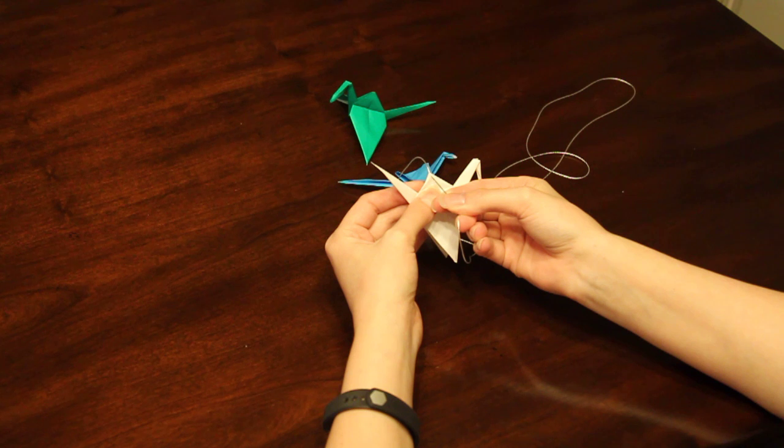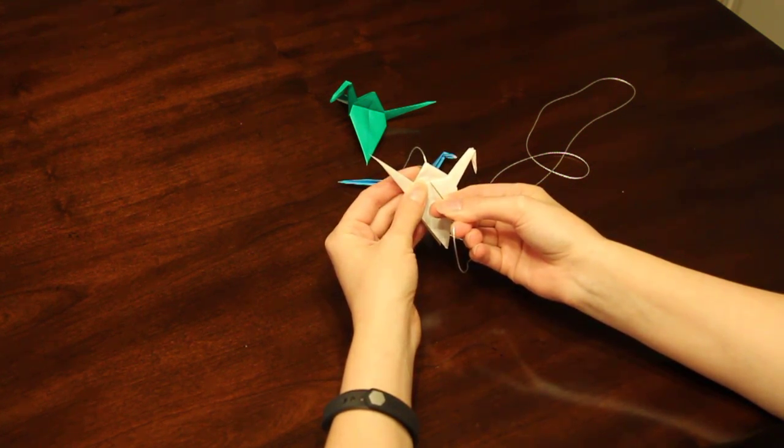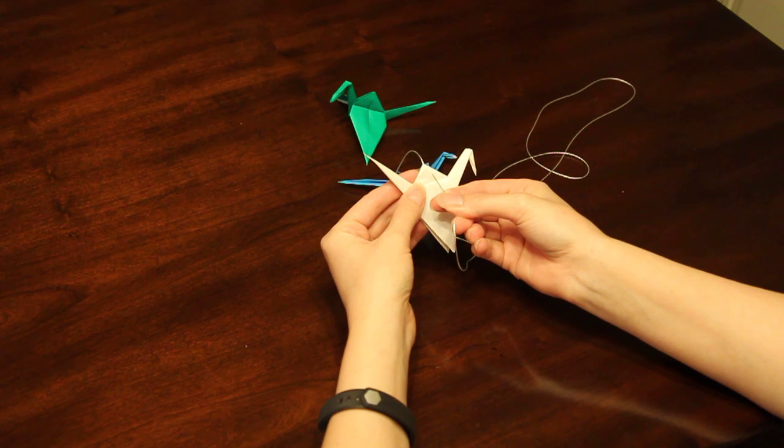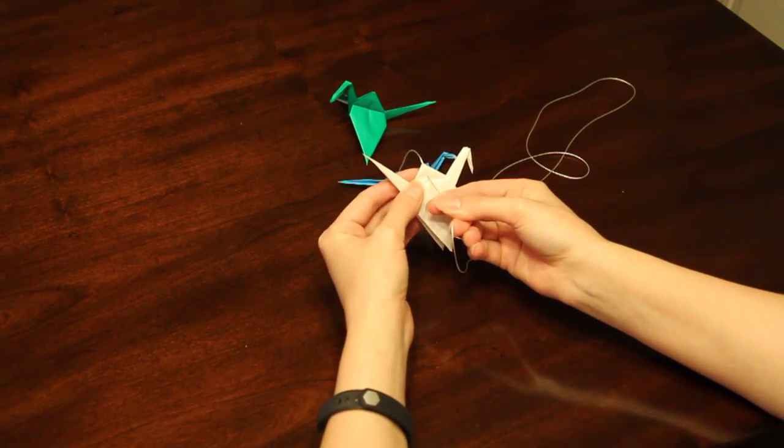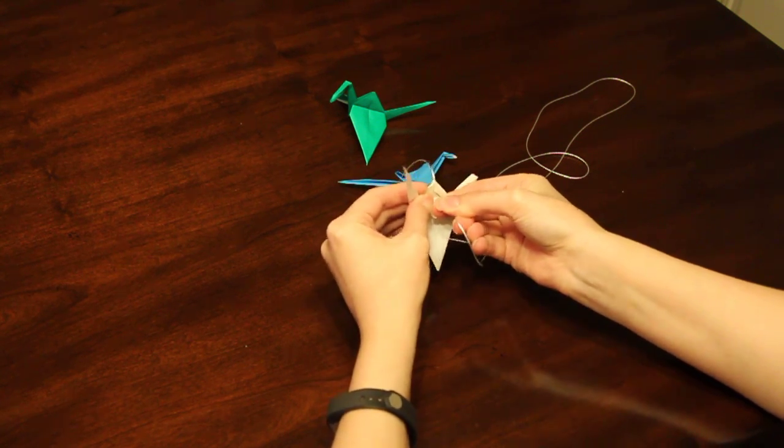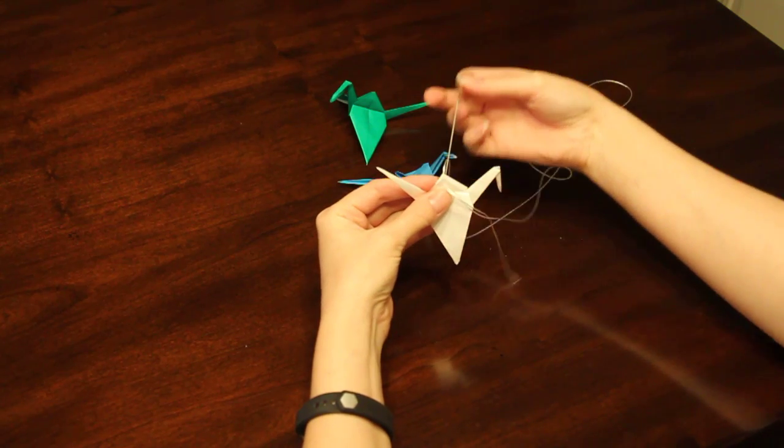Don't do it too close to the edge because it'll rip, but you don't want to do it too far down because then it'll just look silly. I usually do about halfway from the point to the top of the wing. Stick that needle in and make it go all the way through.